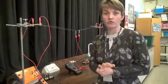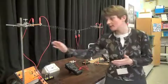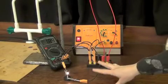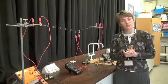So in the model of the national grid we need something to represent the power station. In this model the power station is represented by a power pack, so this power pack is giving us some electricity and that represents what the power station does.